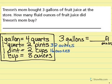So 1 quart is 32 ounces. 4 quarts is a gallon. I'm going to multiply 32 by 4.